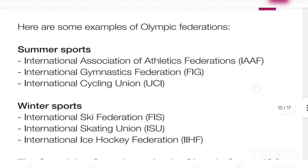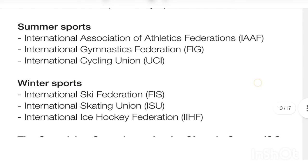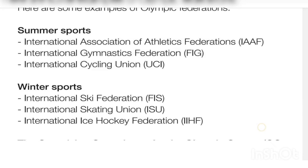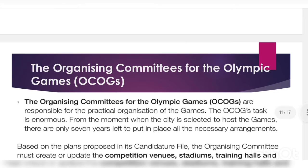Some examples of Olympic federations: the International Association of Athletics Federations (IAAF), the International Gymnastics Federation (FIG), and the International Cycling Union. For winter Olympics: the International Skating Union and the International Ice Hockey Federation. All these federations work together when Olympic games are conducted, because the Olympics is such a large event that everyone must collaborate to make it successful.